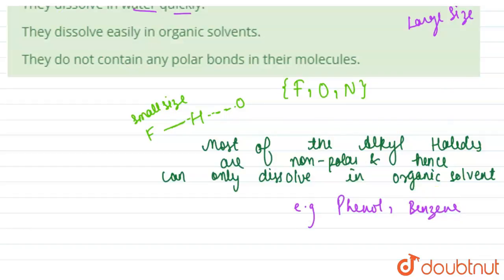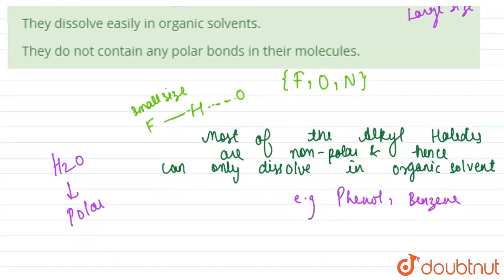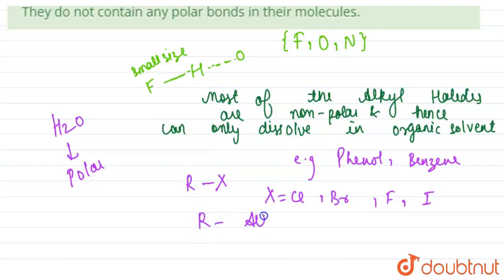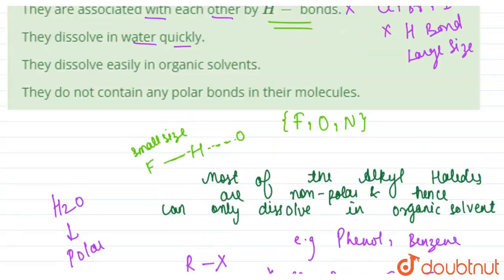They cannot dissolve in water because water is polar. Alkyl halides are basically alkanes having one hydrogen replaced by a halogen, where X can be chlorine, bromine, fluorine, or iodine, and R represents an alkyl group.